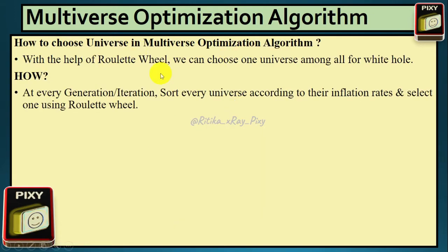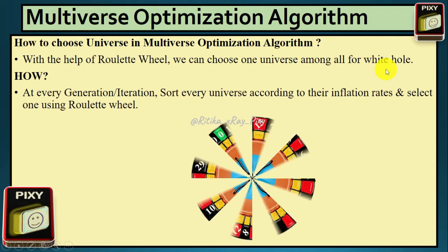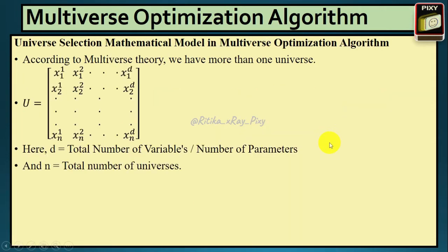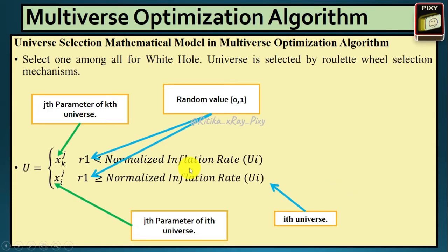With the help of the roulette wheel, we can choose one universe among all for the white hole. At each iteration, we sort universes according to their inflation rate — that is, the fitness value — and select one using the roulette wheel. Here, D is the total number of variables or parameters, N is the total number of universes. In the mathematical model, this is the Gth parameter of the Kth universe, the Gth parameter of the Ith universe, and R1 is a random value between 0 and 1.